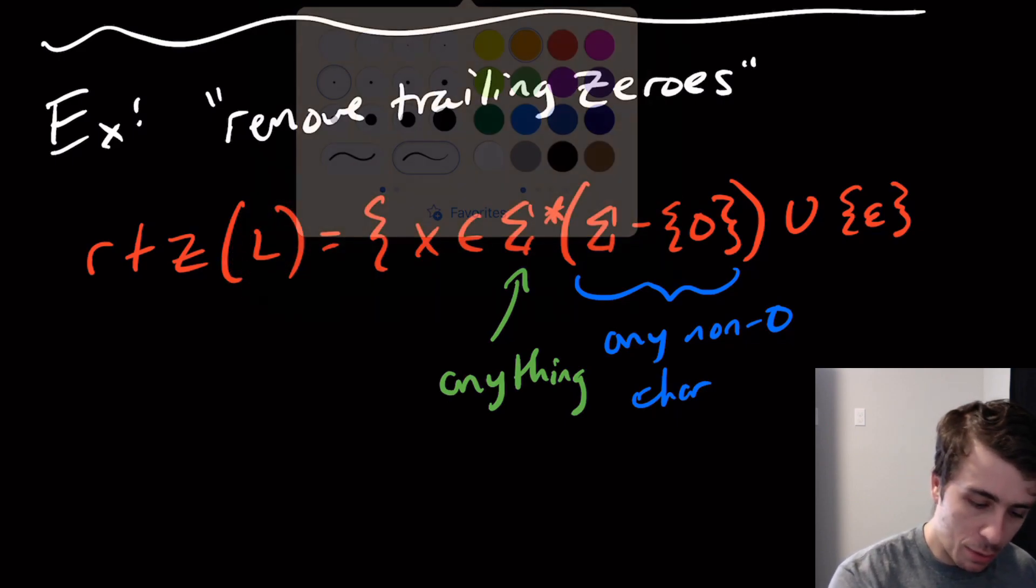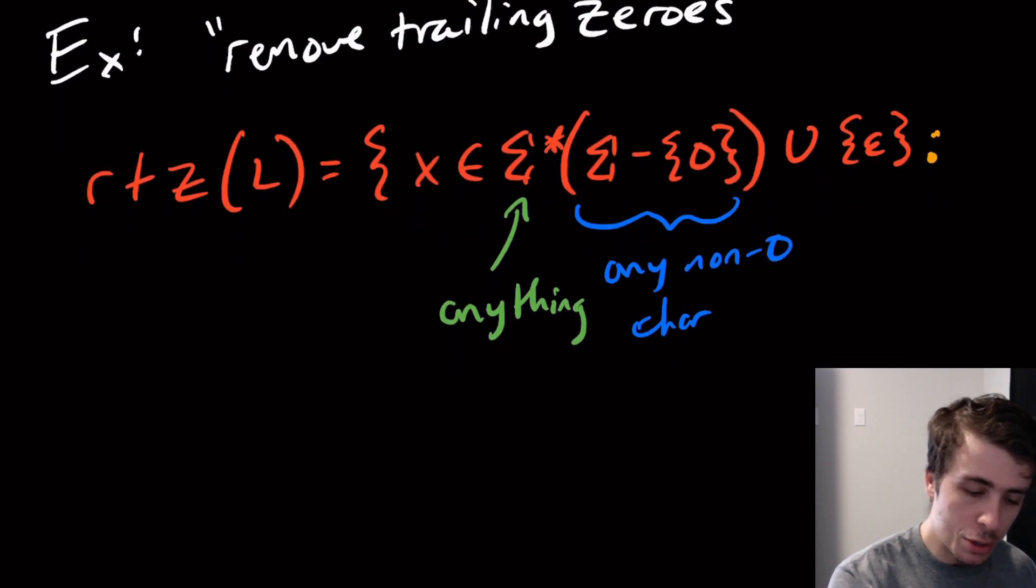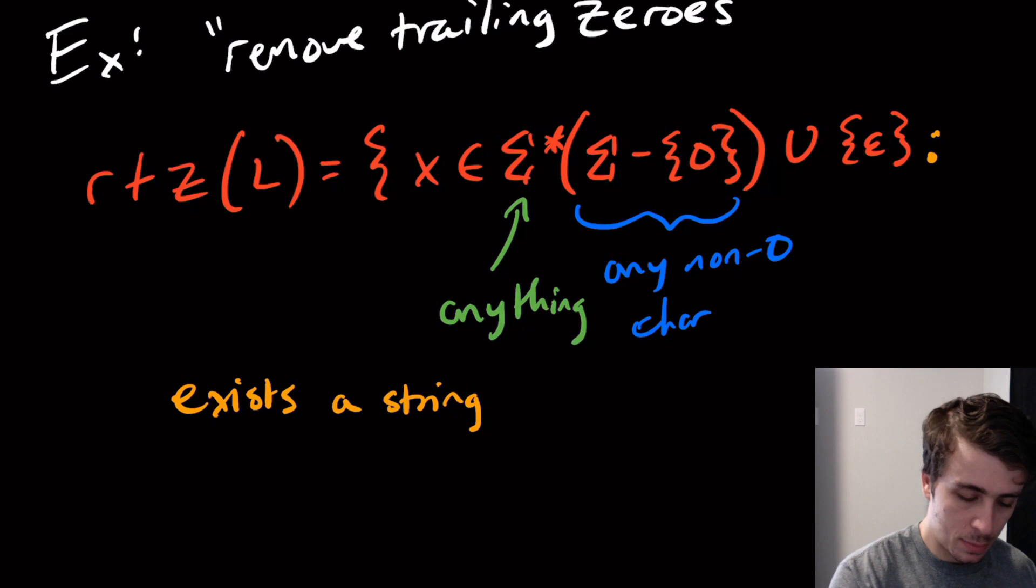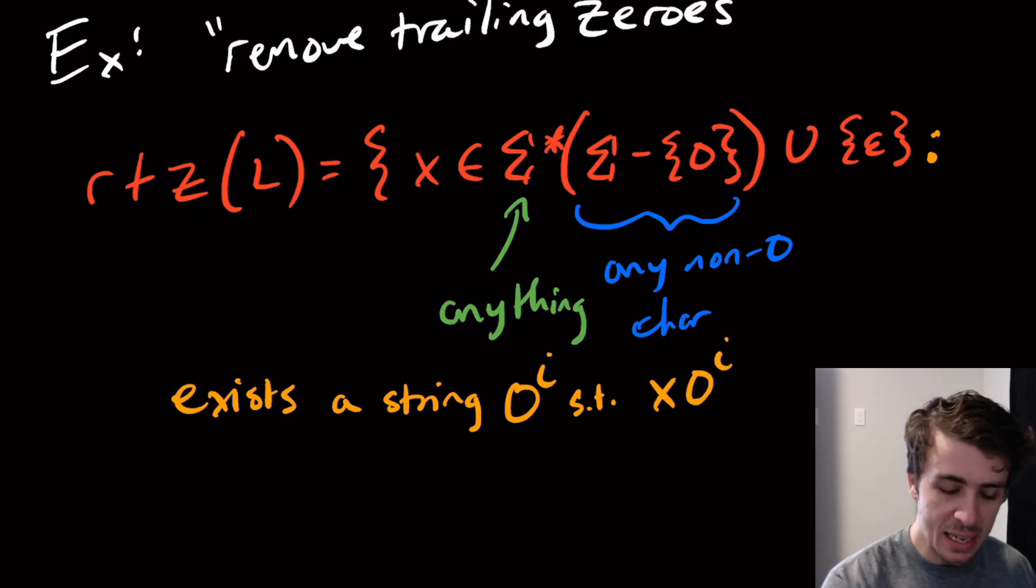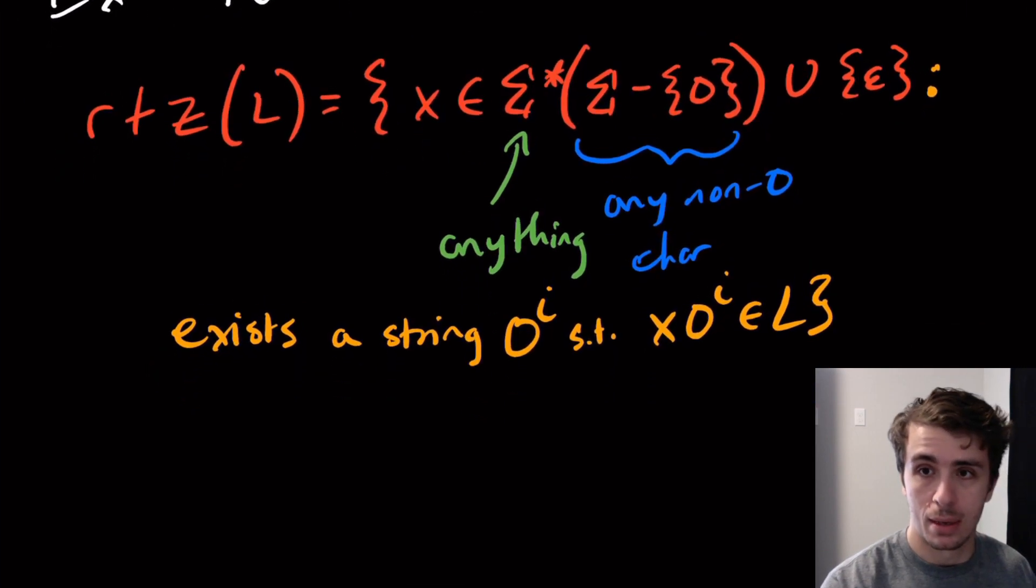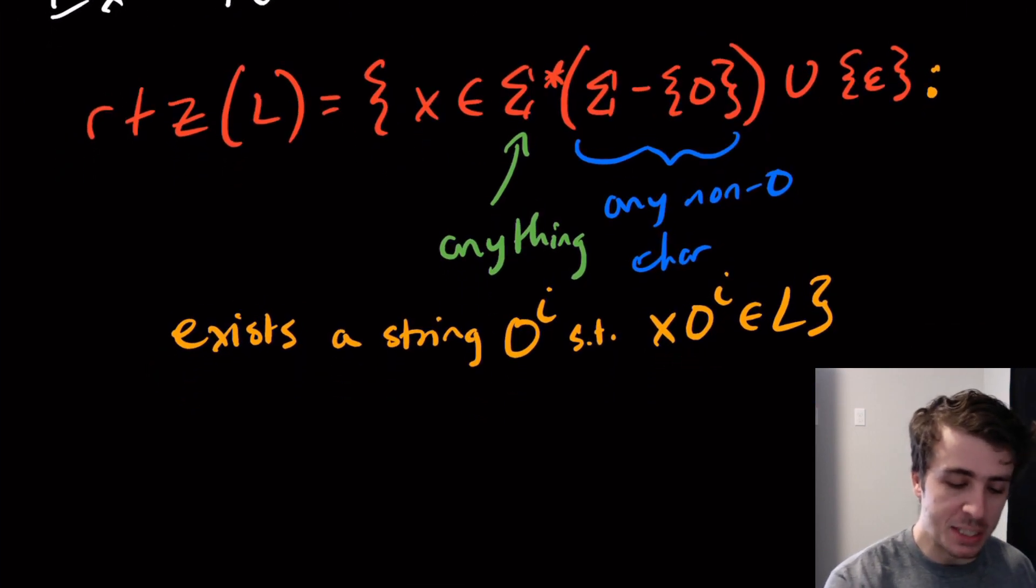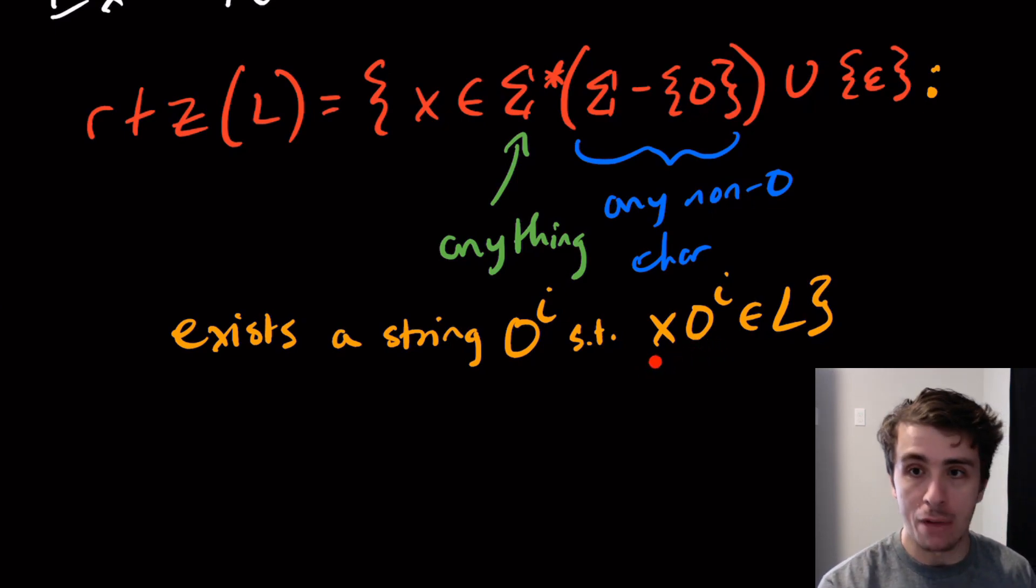The way that we're going to get around this is we're going to say all the strings of this form such that there exists a string 0^i for some integer i such that x with those zeros at the end is in L. That's the definition of the language. Why does this make sense? Because we enforce that the last character is not a zero, so that means we're having the zeros taken off of the strings in the language L and then we're left with the x part.